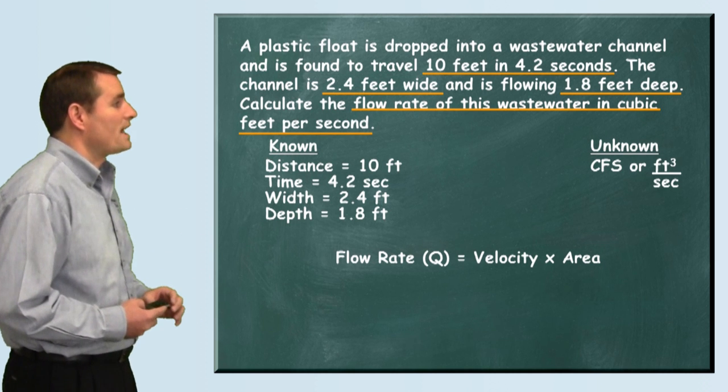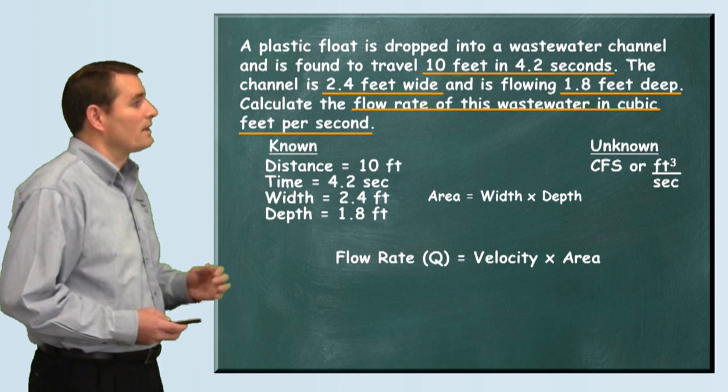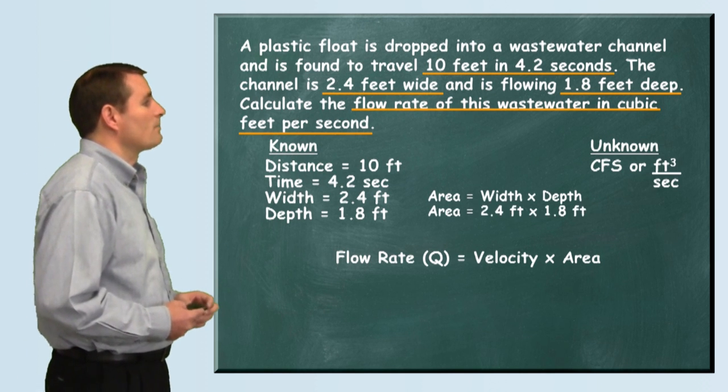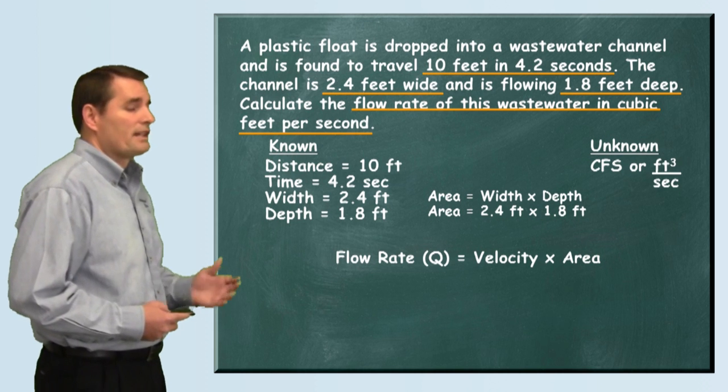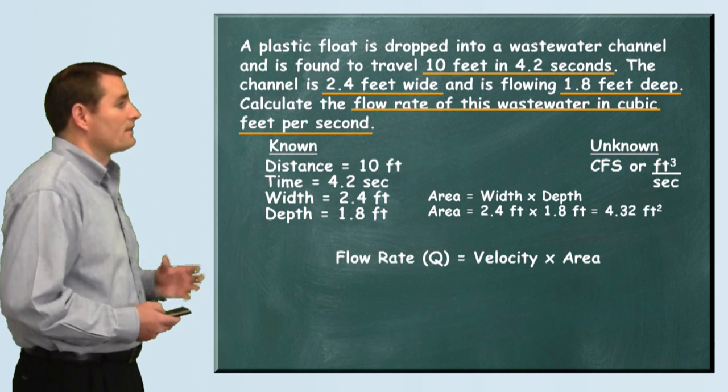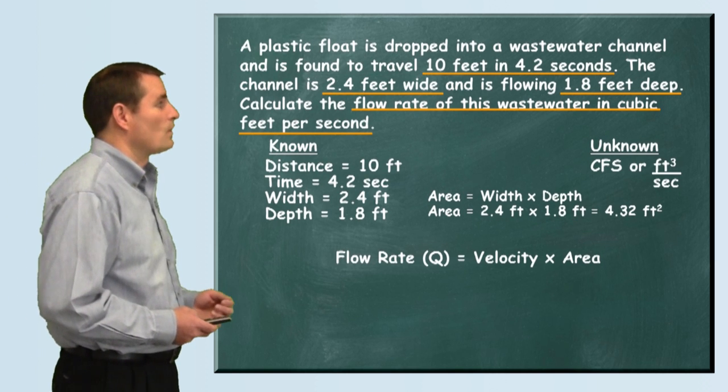We're going to need to do a little side calculation to calculate the area of this flow channel. Area is the width times the depth. When we plug in our numbers, 2.4 feet times 1.8 feet, we find that the total area of that flow channel is 4.32 square feet.